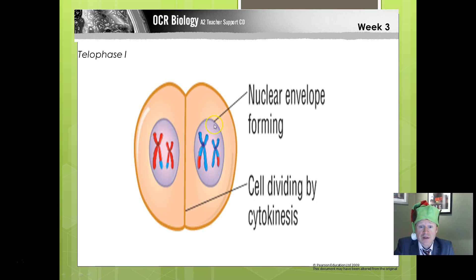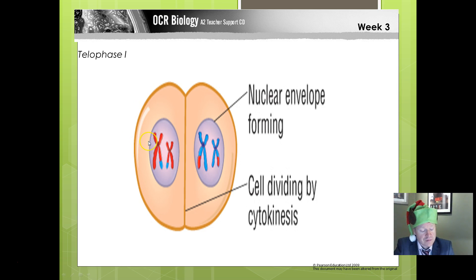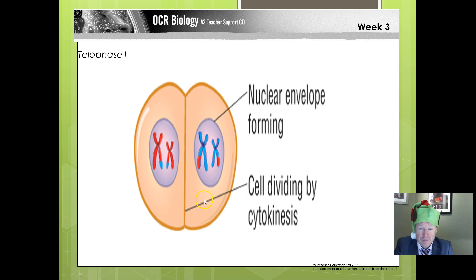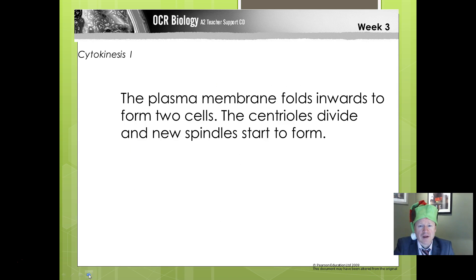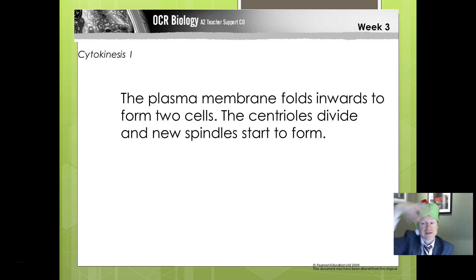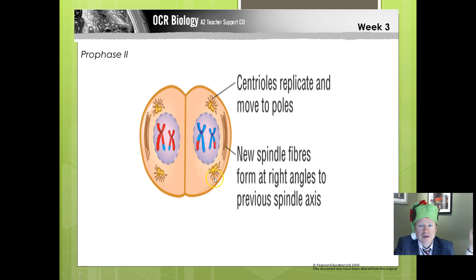We then go into telophase one. We've got formation of a nuclear envelope and the cells dividing through cytokinesis. Often this will happen in animal cells; it doesn't happen in plant cells. They'll tend to go straight from anaphase one into prophase two — they won't bother with the telophase one stage in plants. In animals this will usually occur. You very briefly get a nuclear envelope forming, and it moves quite quickly, possibly sometimes with a short interphase in between, into the next stage. You get cytokinesis, which begins to form two new cells. The centrioles divide 90 degrees so we're getting the opposite poles forming, and new spindles start to form as we go into the second stage. The centrioles replicate, move to the poles, and you get new spindle fibers at right angles to the previous axis.